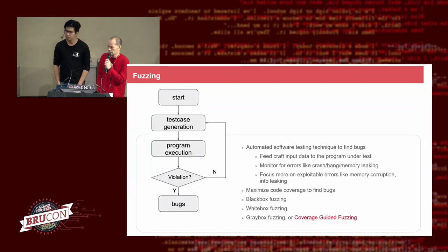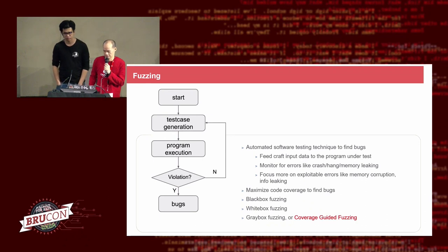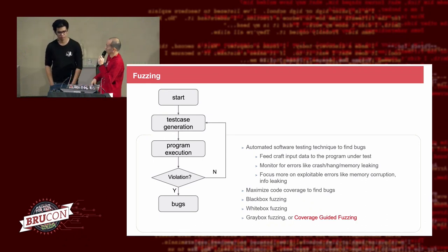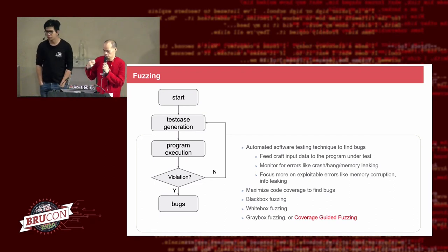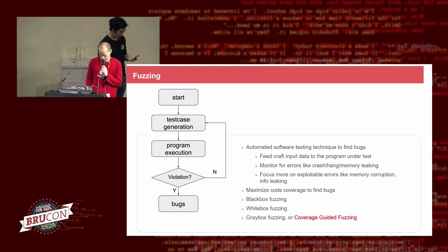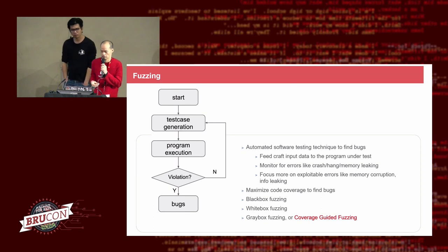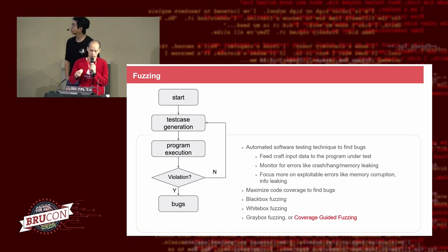First part about fuzzing. The idea is very simple. Fuzzing is a technique for you to automate software testing to find bugs. We run the fuzzer by feeding crafted input data to the program we want to test, in an archive loop. When the program's running, we monitor it to see if there are any errors like crash, hang, or memory leak. If we focus on exploitable bugs like memory corruption or information leaking, we can find vulnerabilities.